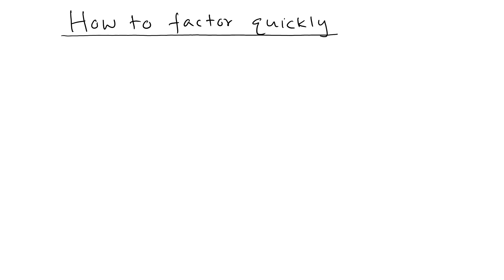Most of the time we come across problems where we need to factor quadratic polynomials, so let's see how we can factor quadratic polynomials fast. Let's look at this problem: we're going to factor x squared minus x minus 12. When you get a problem like that, the first thing to notice is that the coefficient in front of x squared is 1.